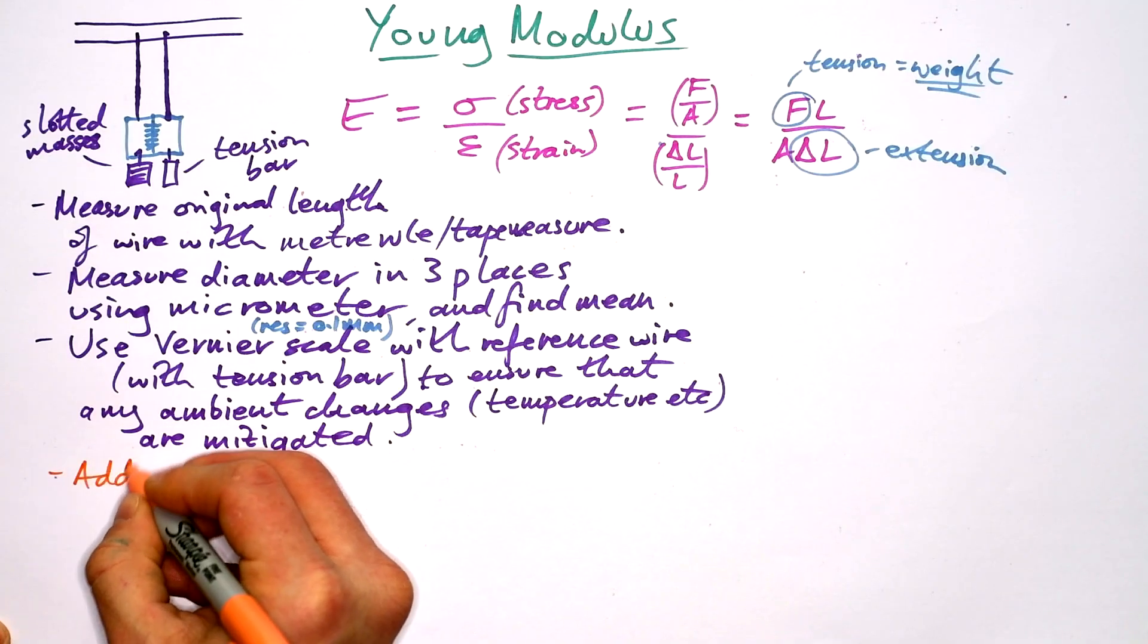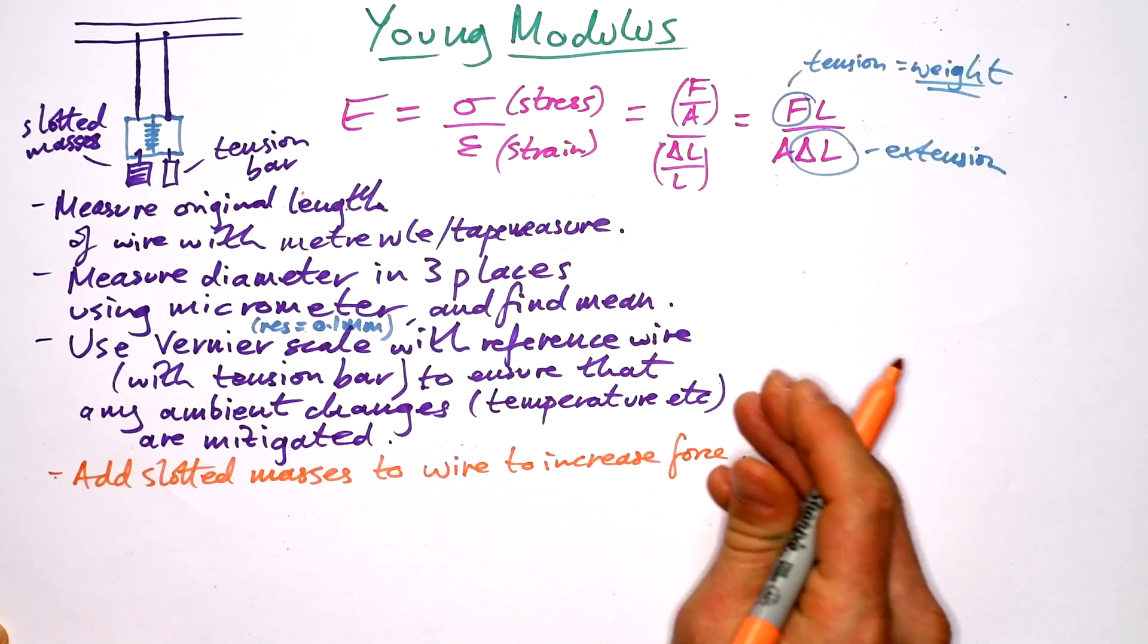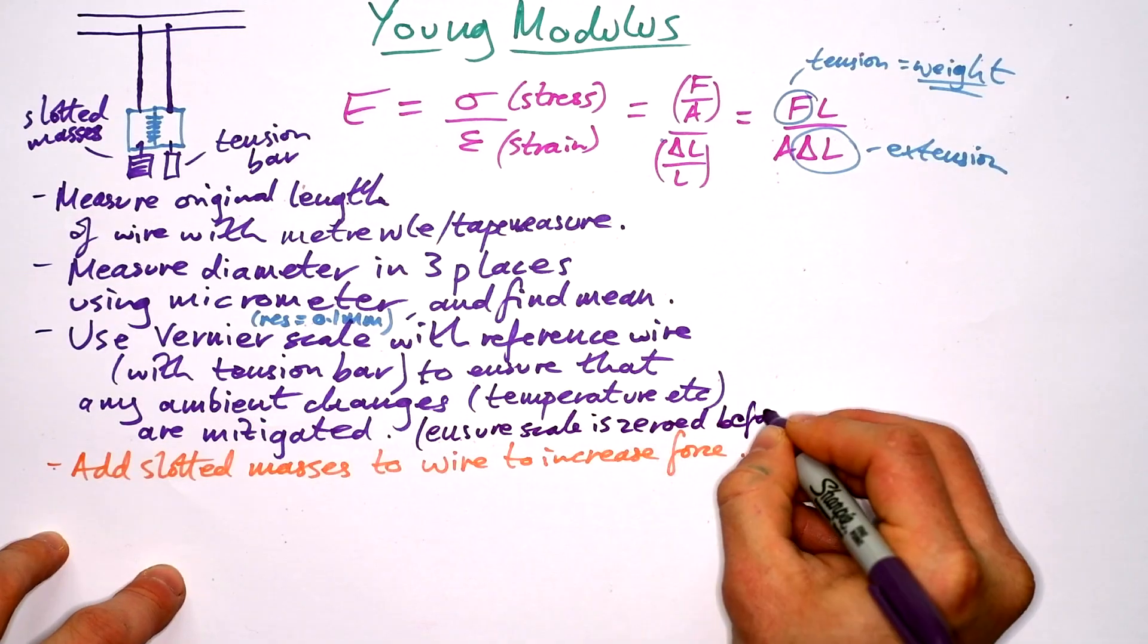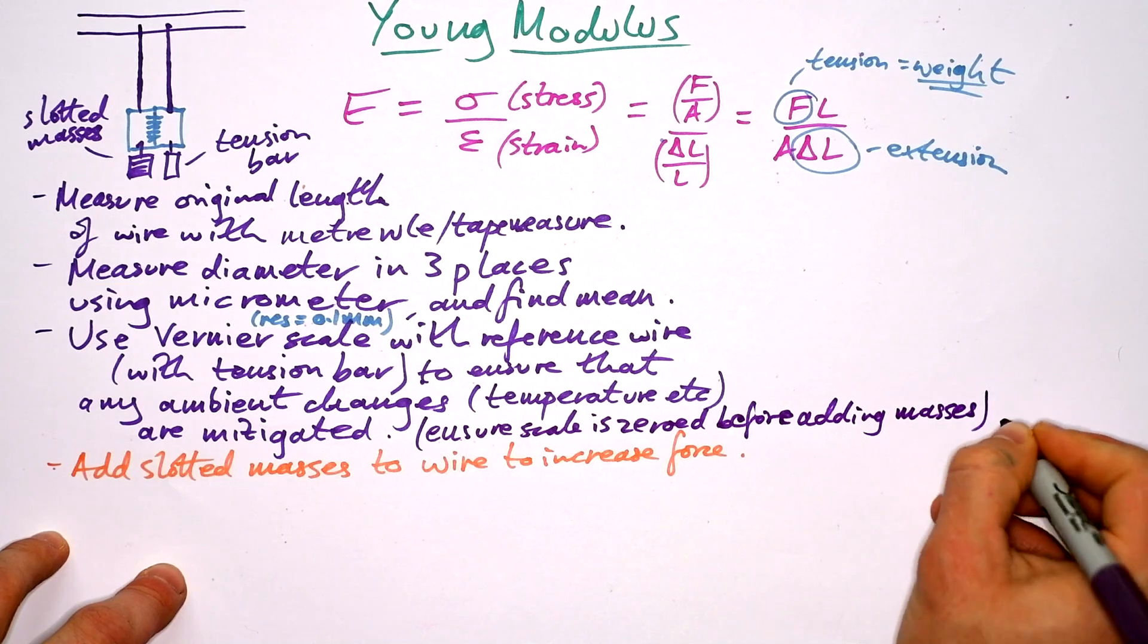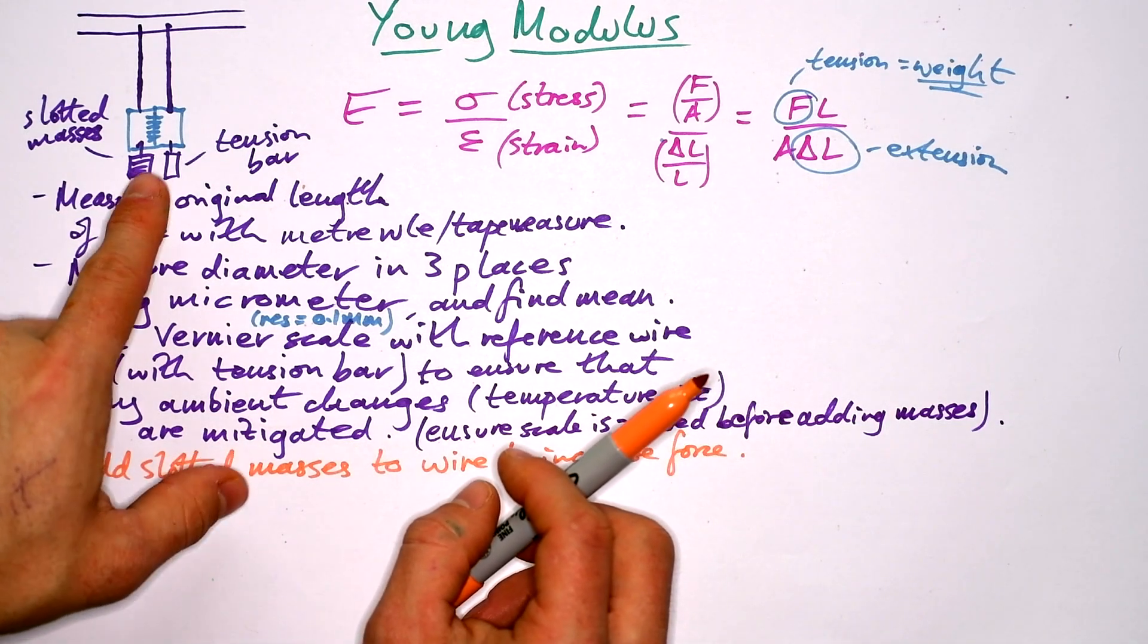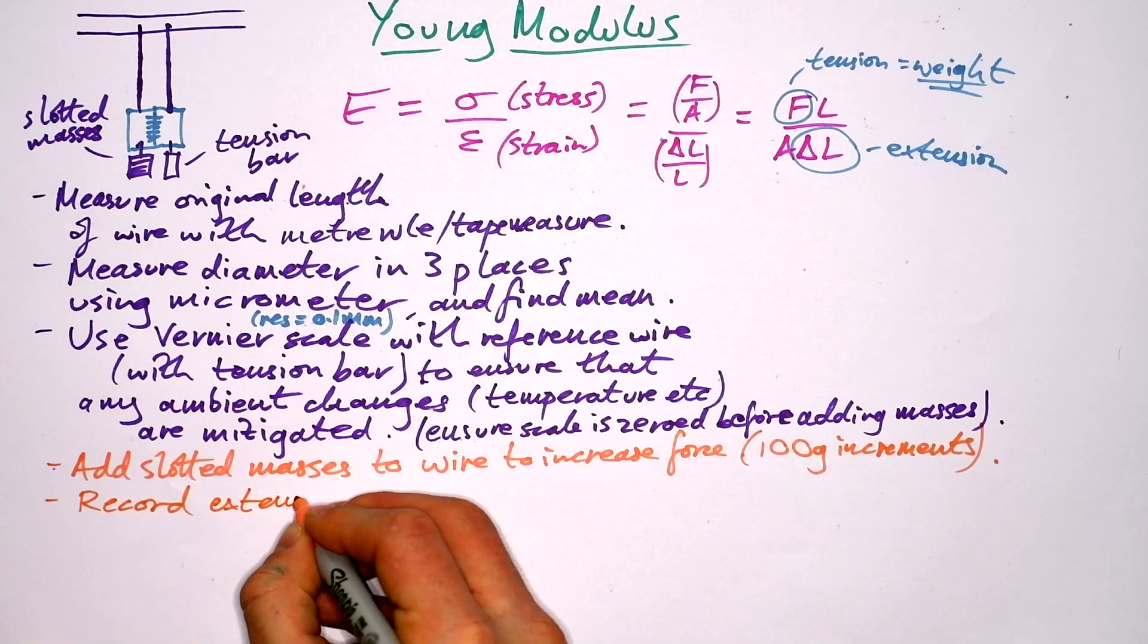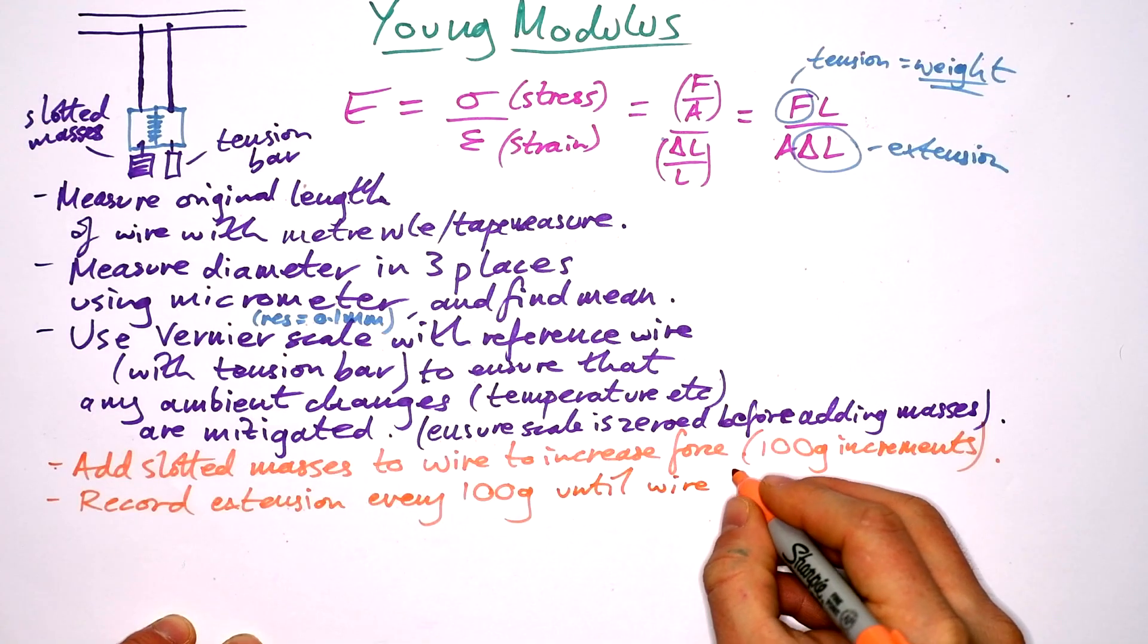So we want to add slotted masses to wire to increase force and therefore stress. I probably should have said here as well, ensure scale is zeroed before adding masses. Now, in theory, but what I do is that I add 100 grams to make sure it's taut and then I zero it. And we do want to add 100 grams at a time. And we want to record the extension every 100 grams until wire breaks.